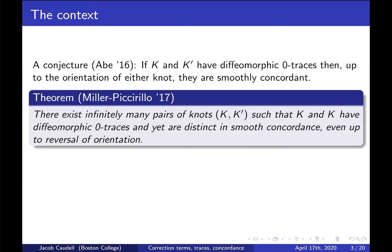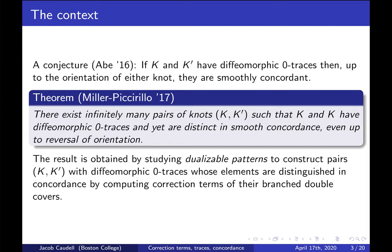Very shortly after this conjecture was issued, Miller and Piccarillo proved that there exist infinitely many pairs of knots with diffeomorphic zero-traces yet are distinct in smooth concordance, even up to reversal of orientation. This is the main result we're going to talk about today. This result is obtained by studying dualizable patterns, and they use dualizable patterns to construct pairs of knots with diffeomorphic zero-traces that we can distinguish by appealing to some Heegaard Floer homology of their branched double covers.